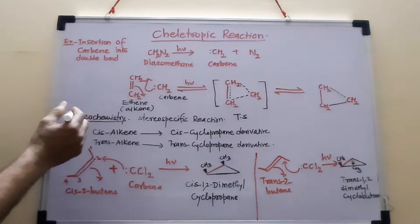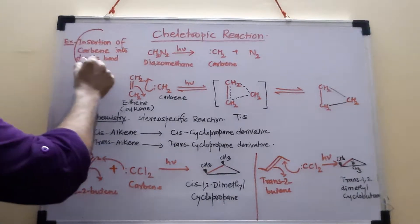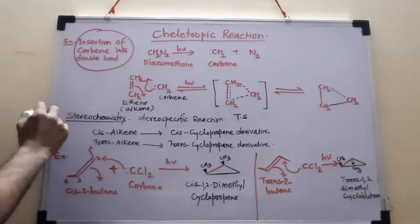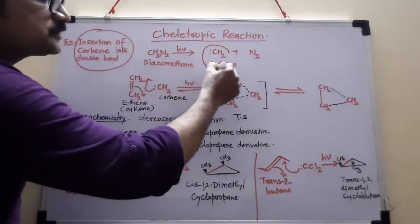And a very good example of this type of reaction is insertion of carbene into double bond. How that carbene is generated? This moiety is called carbene.